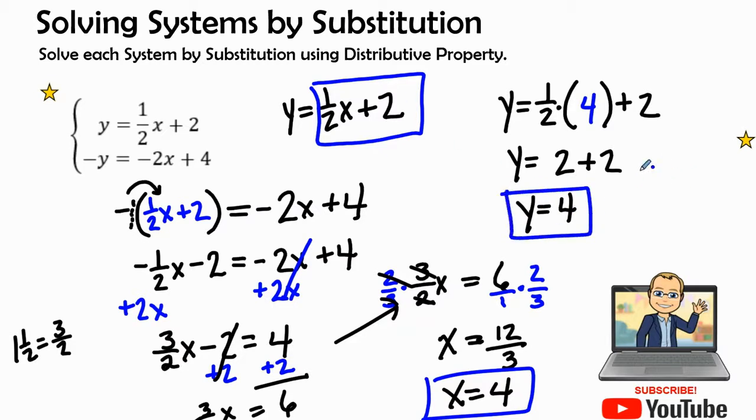So y equals 1 half times 4. Half of 4 is 2, 2 plus 2, y equals 4. So it's pretty cool that my answer is 4, 4. That is the point of intersection and that will give us where our two lines meet.